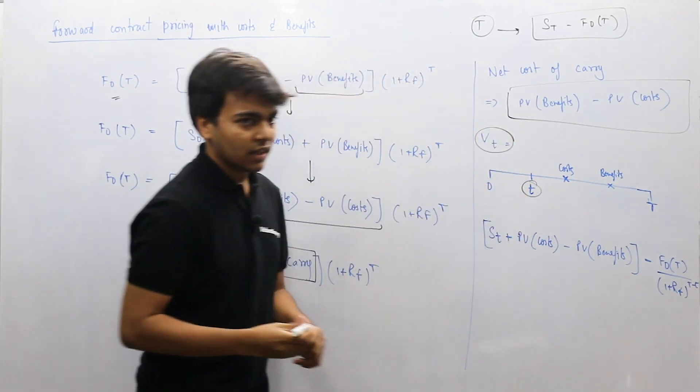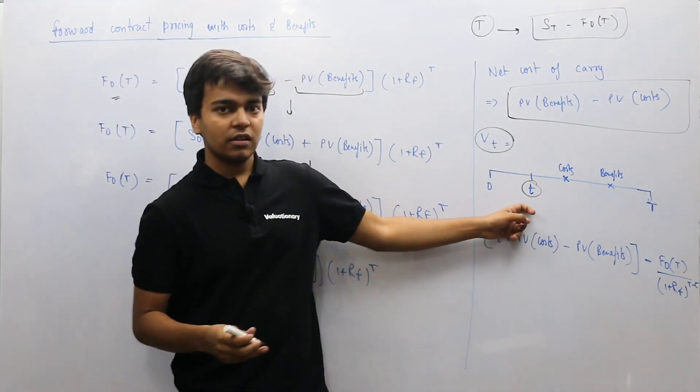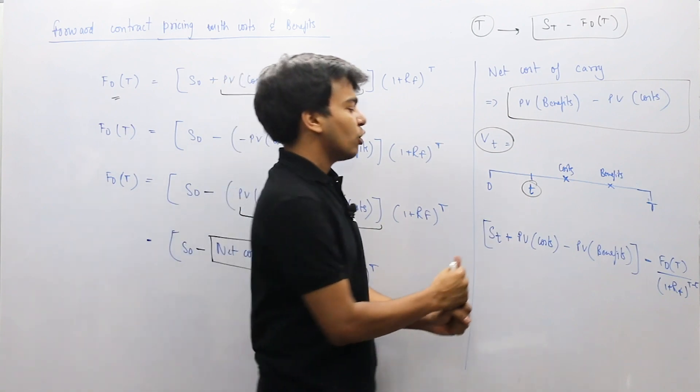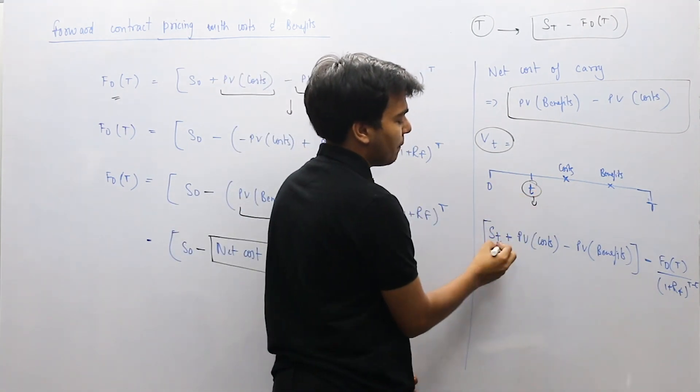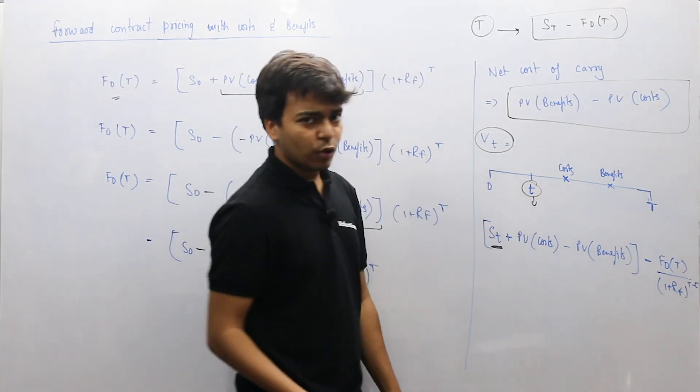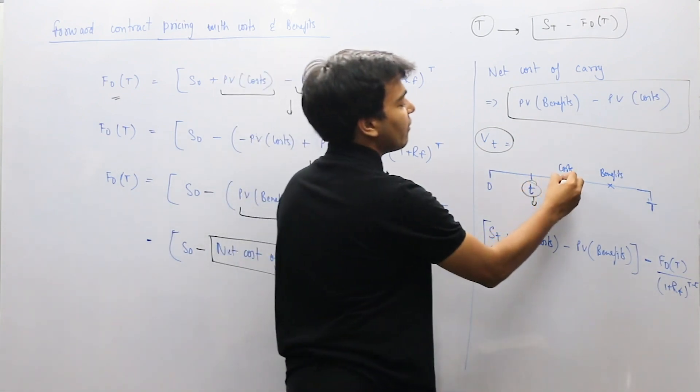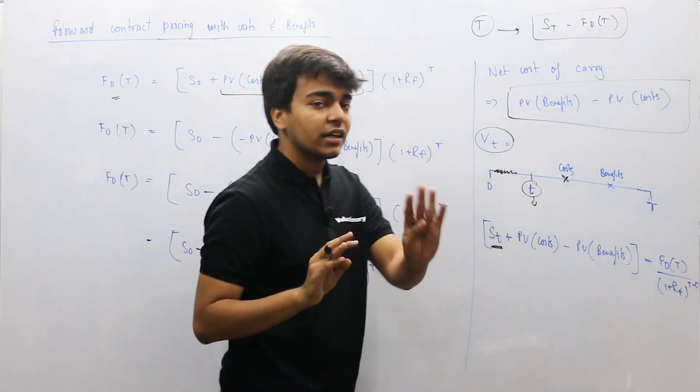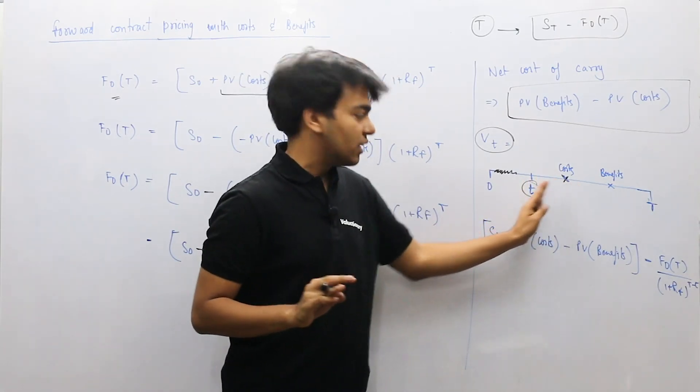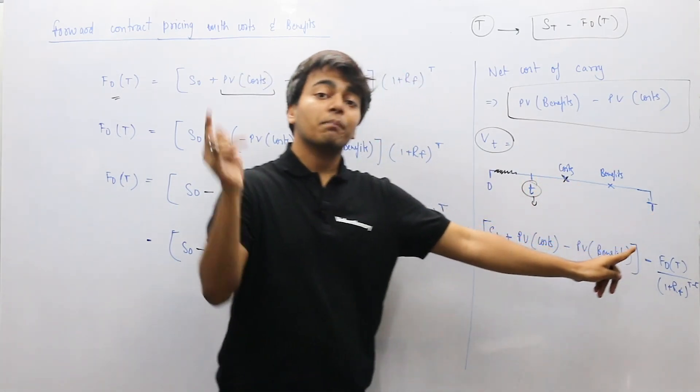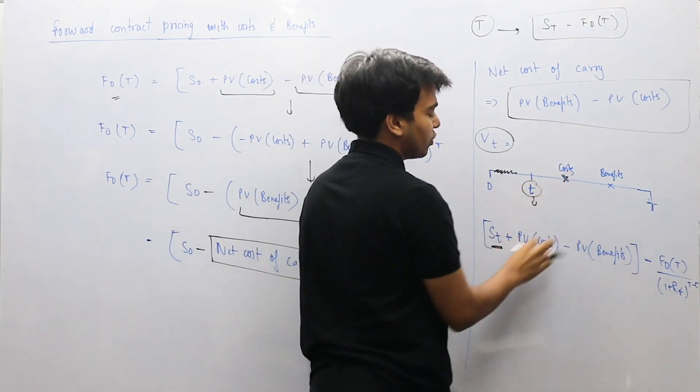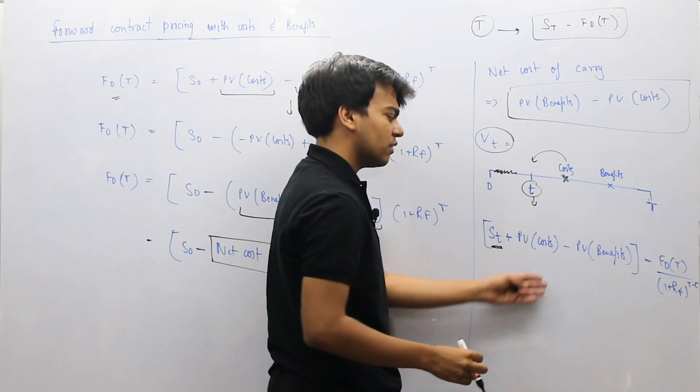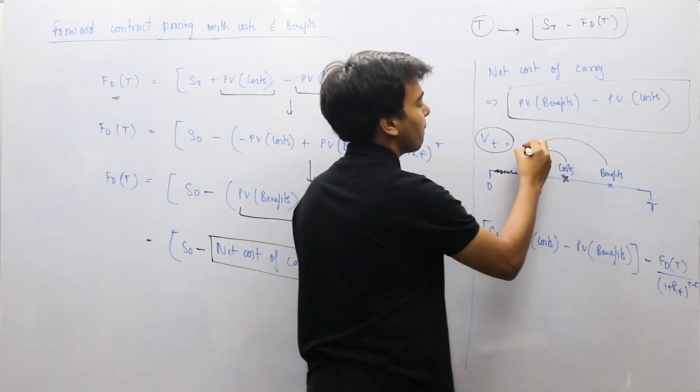Now, the question comes when we have time period in the middle, the value at small t. If we have to remove value, how do we do it? Say for example, we are standing here at small t, capital T is here and 0 is here. So here it is small t, which is the value at this time period, which we can remove. So at this time period also, we will here consider the present price. So at time period t the forward price, we will add the cost and benefit. The present value, we will make the value clear out.